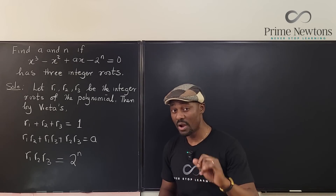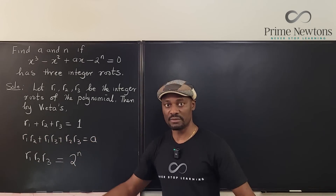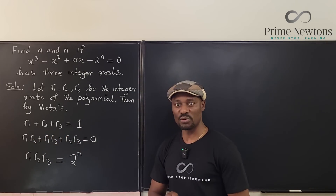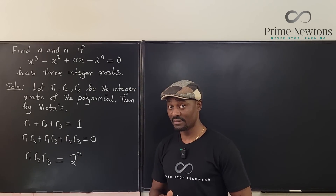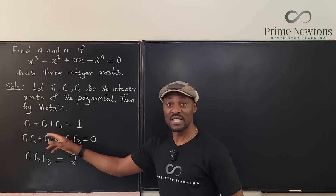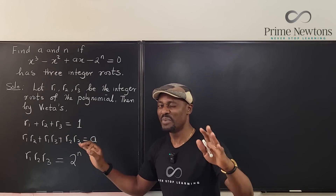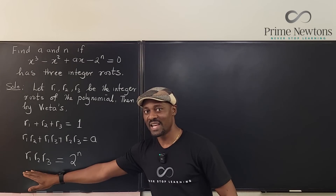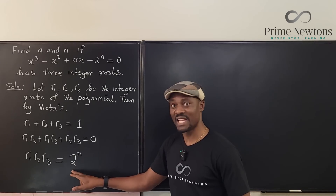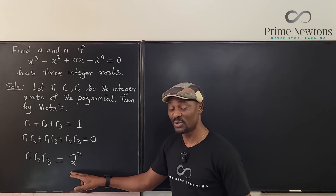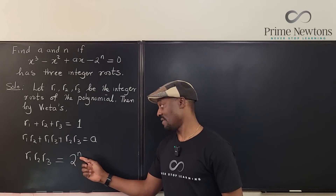Now let's look at the first equation. Remember, r1, r2, r3 are integers. Assume all three are positive — the sum of three positive integers can never equal 1 unless two of them are zero and one is 1. But if two are zeros, their product is zero, which can't equal 2^n since 2 raised to any power is never zero. So all three being positive doesn't work.